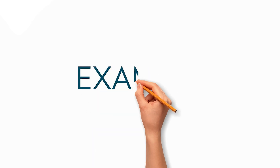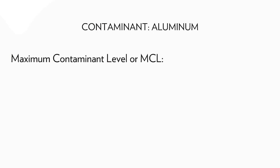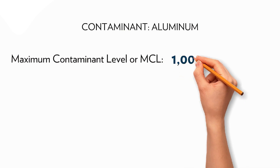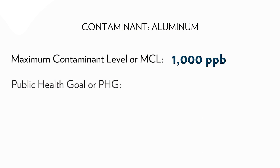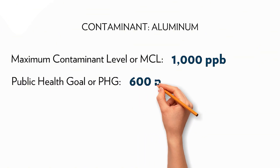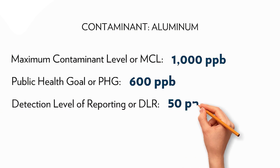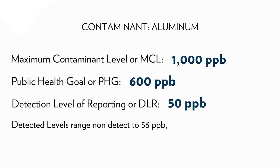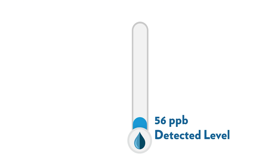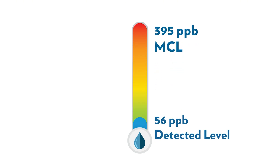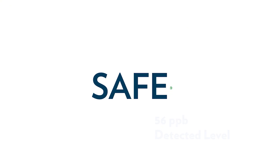Here's an example to make it clearer. Contaminant: Aluminum. Maximum Contaminant Level, or MCL: 1000 ppb. Public Health Goal, or PHG: 600 ppb. Detection Level of Reporting, or DLR: 50 ppb. Detected levels range from non-detect to 56 ppb, and the average is non-detect. In this case, the highest detected level of aluminum in the water is 56 ppb, well below the MCL of 1000 ppb, meaning it's within safe limits.